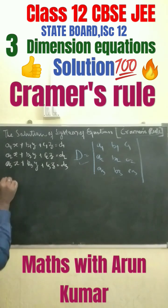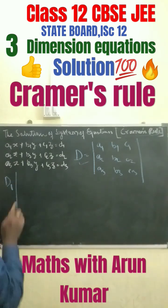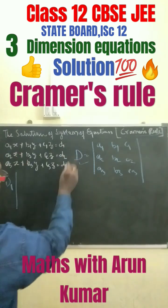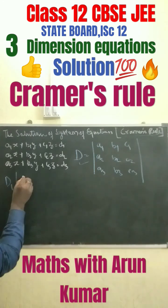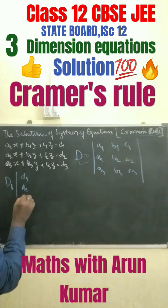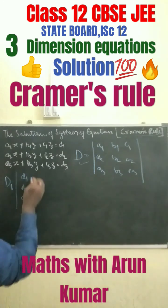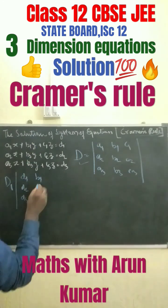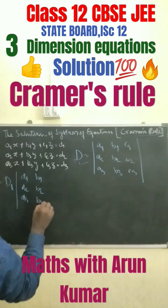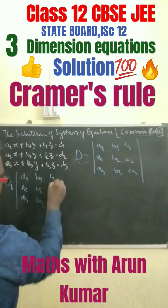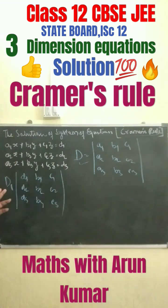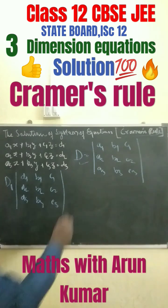Next, we have to find out D1. D1 means the first column will be replaced with d1, d2, d3. So the first column becomes d1, d2, d3, and the remaining columns are b1, b2, b3 and c1, c2, c3. This is how you can get D1.